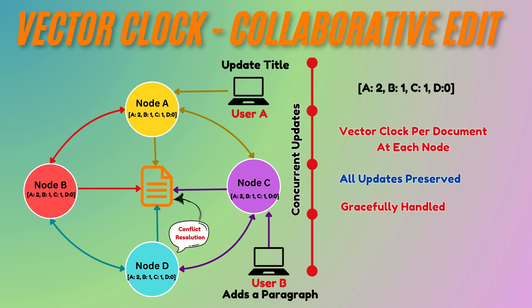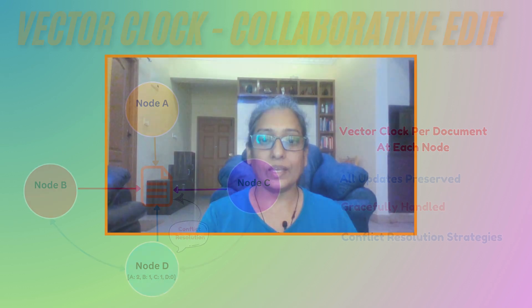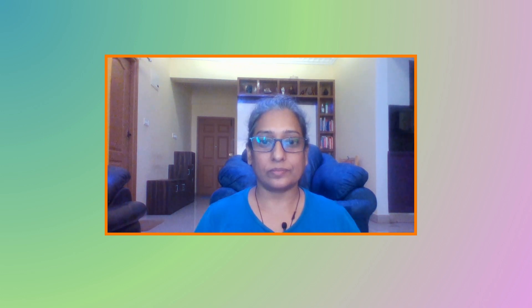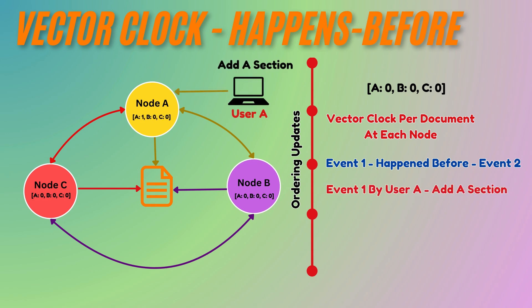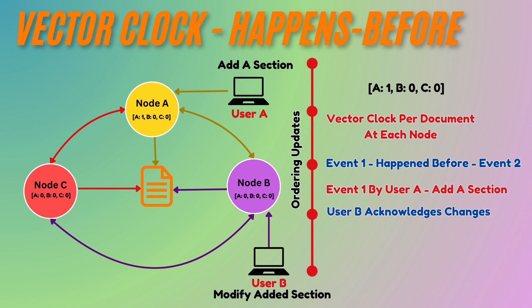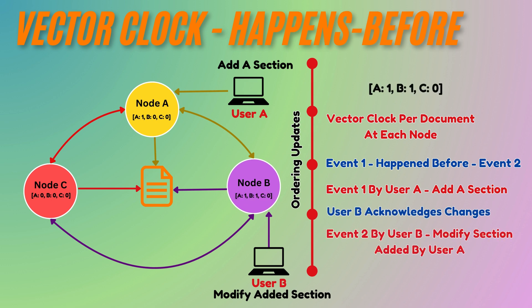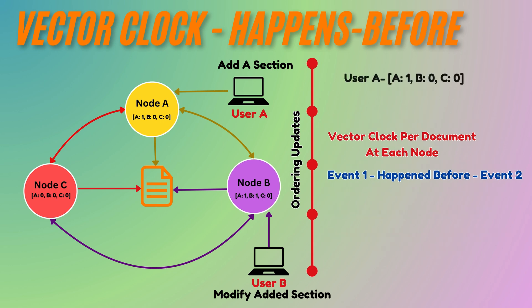This method ensures that all updates are preserved, with conflicts handled gracefully — either by automatic merging or manual reconciliation when necessary. Now let's explore how vector clocks manage causal and concurrent updates. If one operation happened before another, the vector clock will reflect this order. For example, User A makes the first edit while User B and User C have not made any updates. User B then acknowledges User A's update and increments their own counter. User A's vector clock will have a lower or equal counter value compared to User B's in the relevant component.